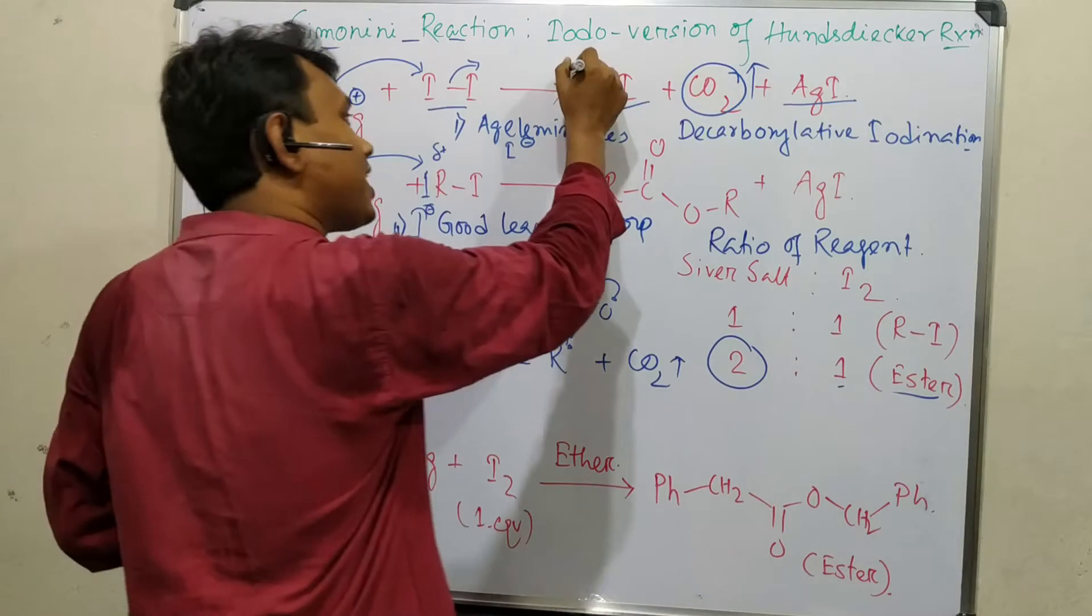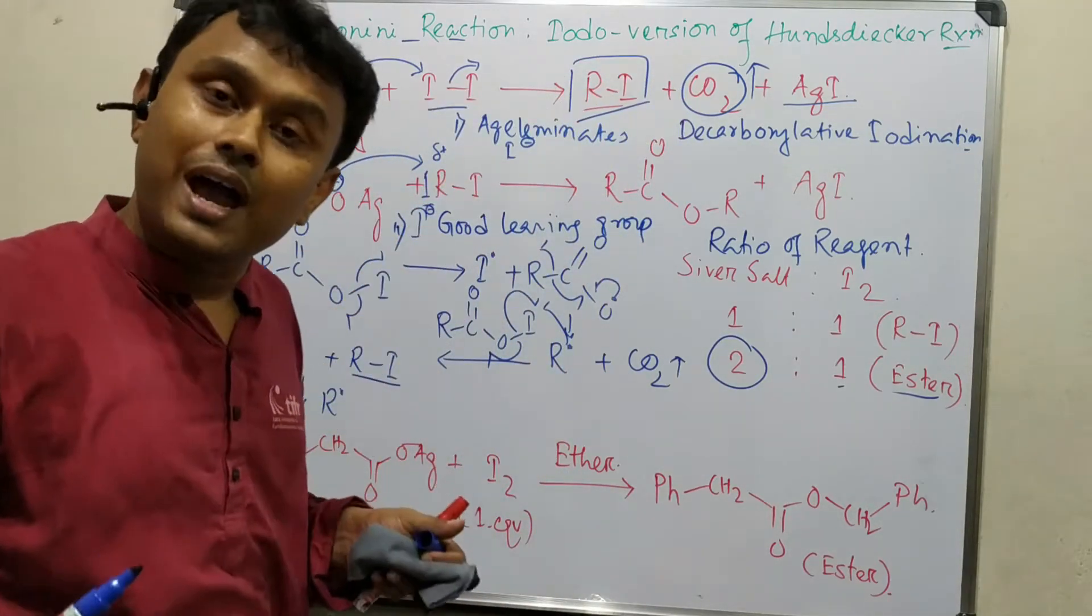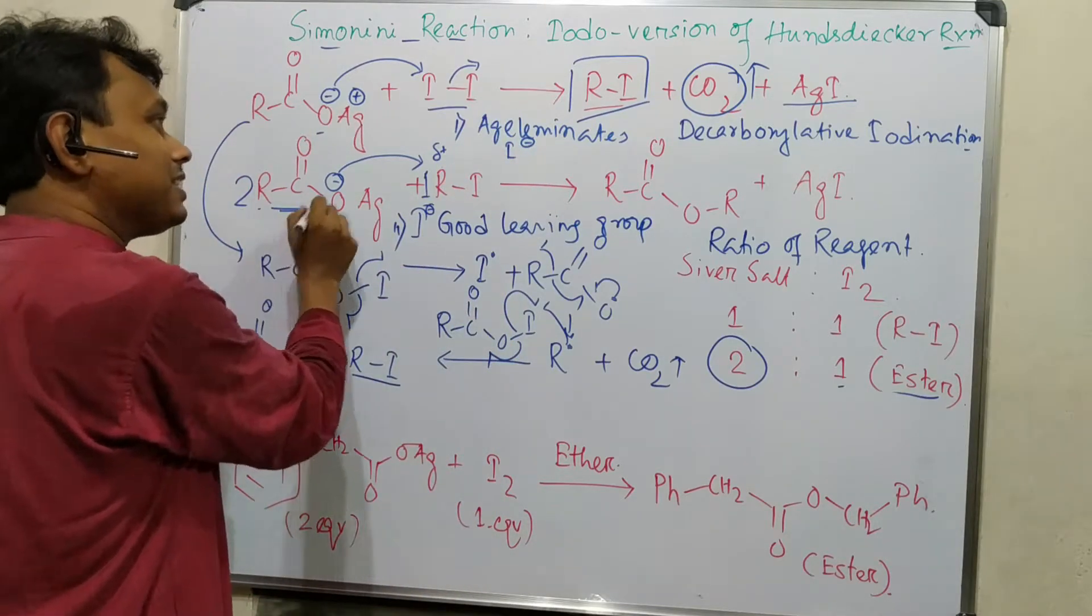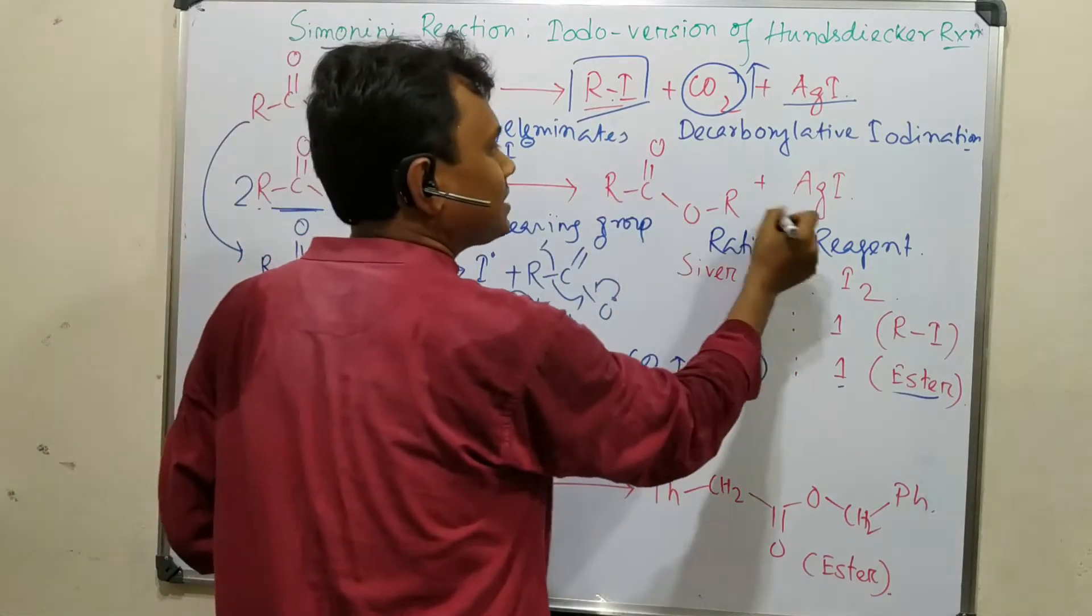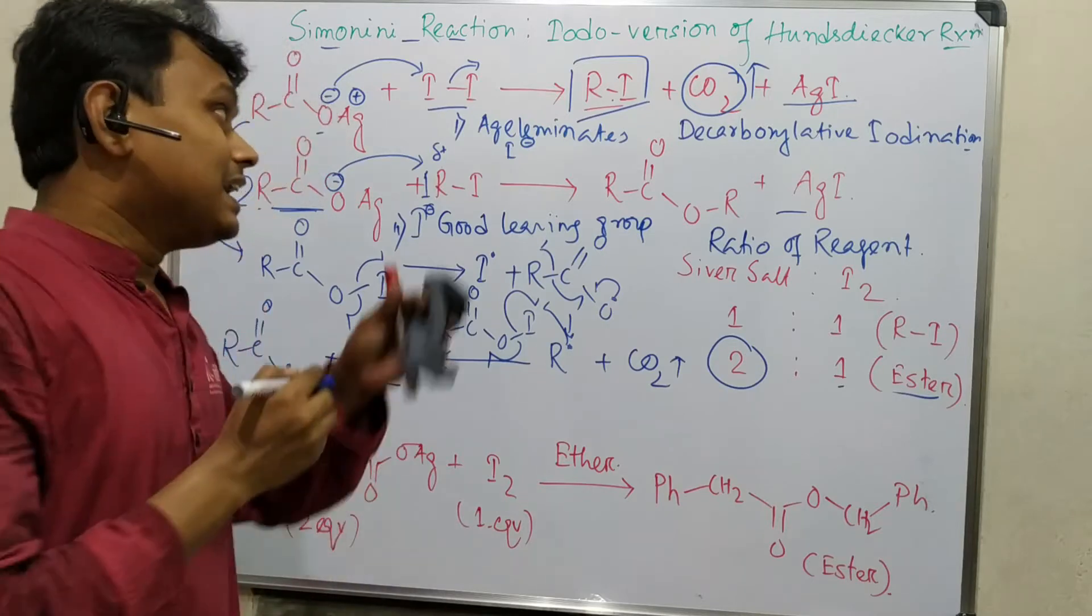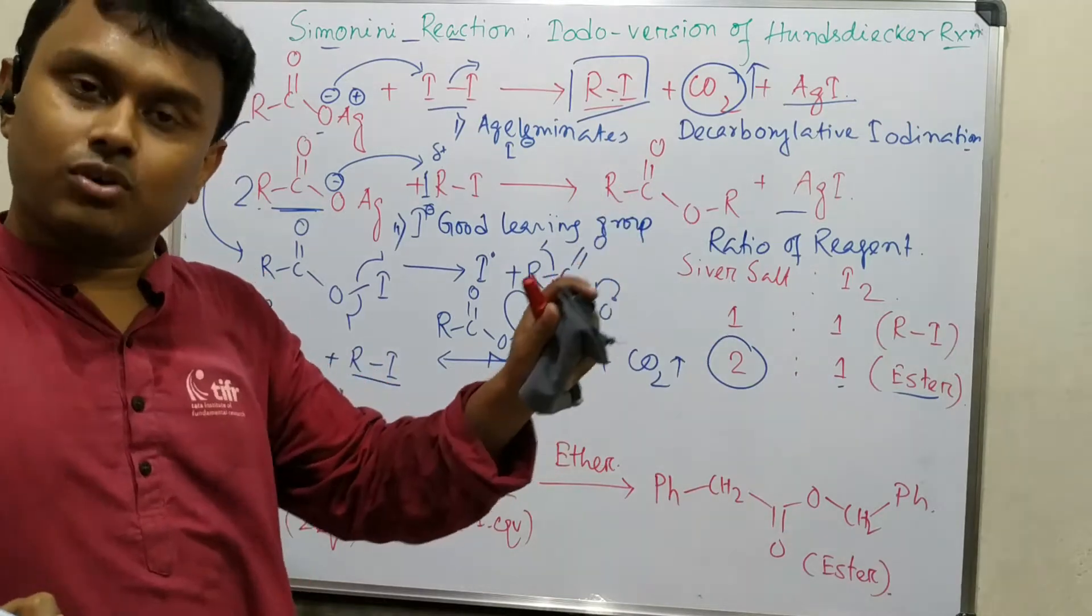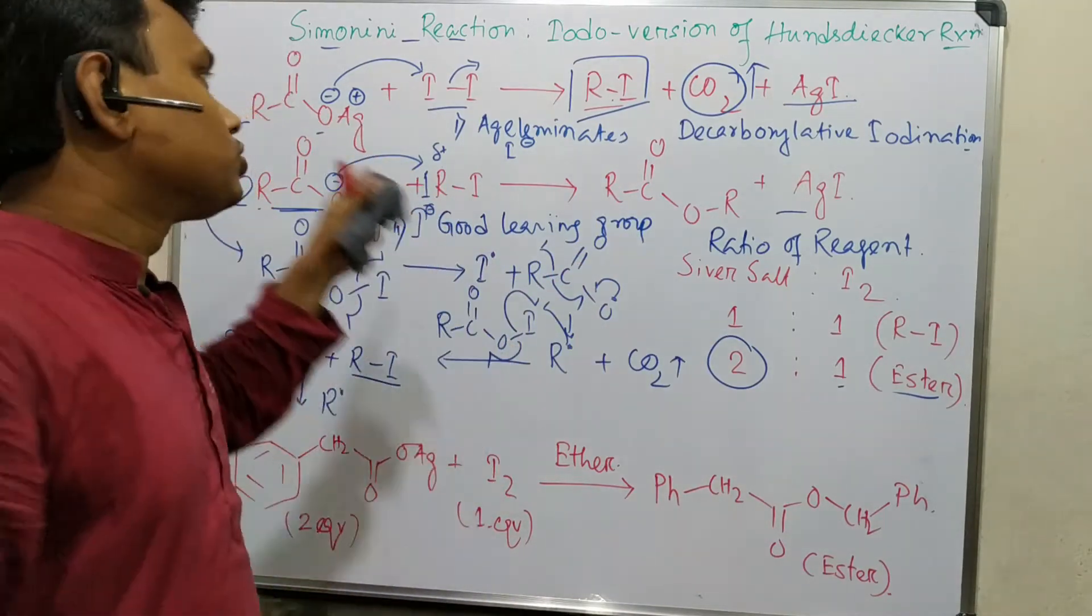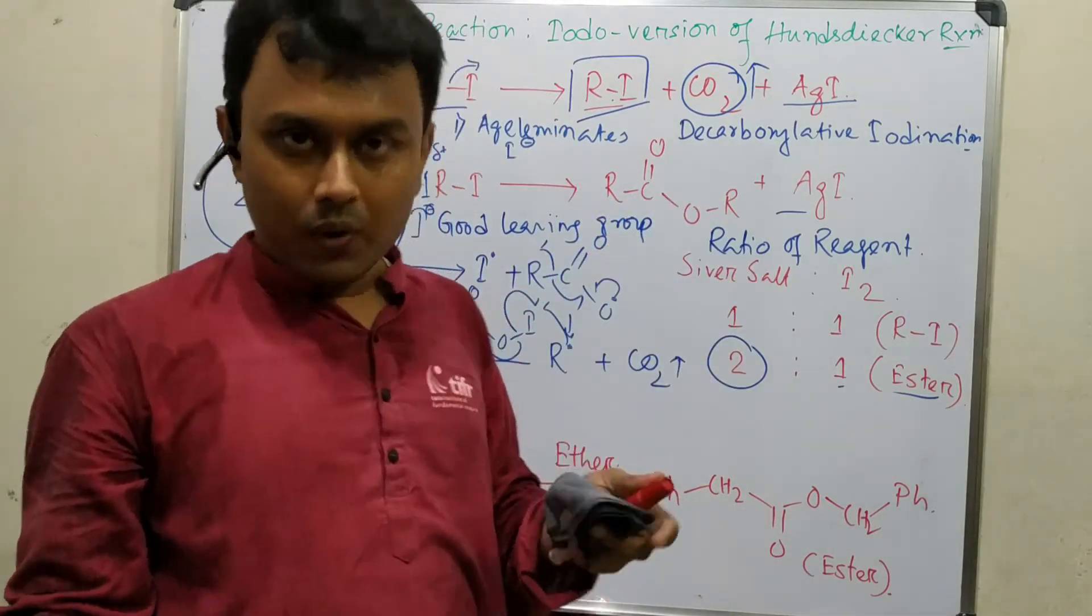What is the conclusion? First R-I is produced. If one equivalent iodine is used, then R-I is produced and all iodine is consumed. After that, one equivalent of ester remains. This is a very good method to prepare ester directly from carboxylic acid via the silver salt. Actually, this silver salt is obtained from the potassium salt, so from carboxylic acid to ester directly in a different way.